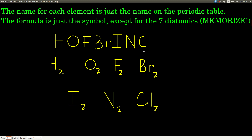What it means is that if we say 'hydrogen,' just the word hydrogen, it means H₂ - two atoms of hydrogen attached to each other. Same thing for oxygen, fluorine, bromine, iodine, nitrogen, or chlorine. If we wanted to say just a single atom of hydrogen, we'd say something like 'atomic hydrogen' or 'atomic oxygen.' But if we just say hydrogen, we mean H₂. If we just say chlorine, we mean Cl₂. So if you see a symbol, the name is just the name of the element, except for the seven diatomic - HOFBrINCl - just remember there's two of those guys.